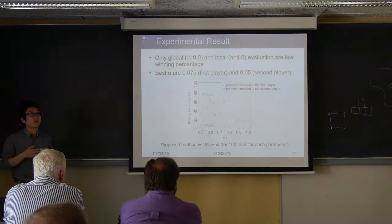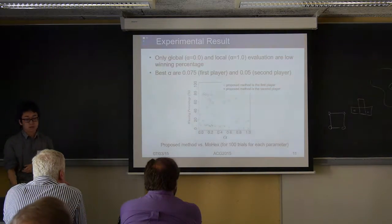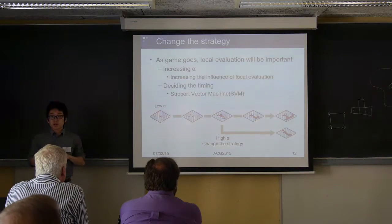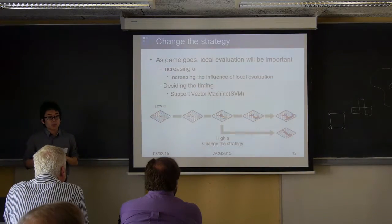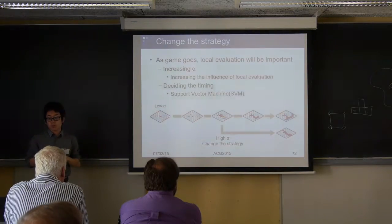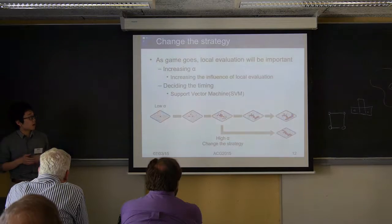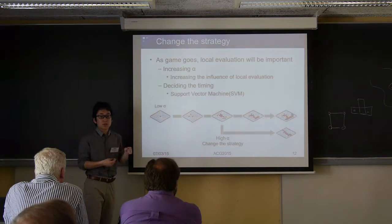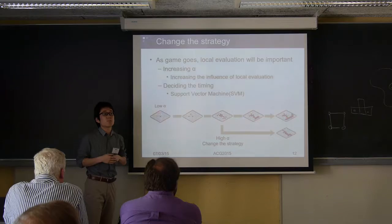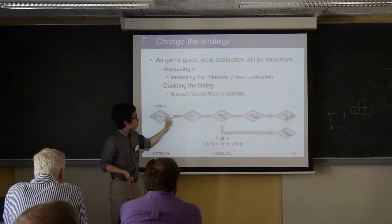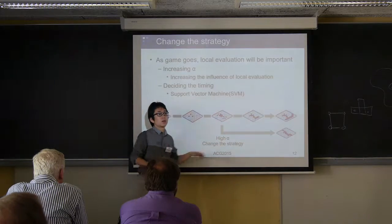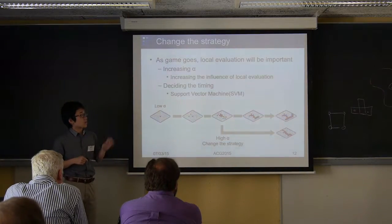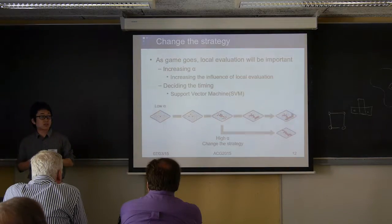To improve our method, we change the strategy depending on board states. The best alpha was a low value when fixed, but we think increasing alpha is effective in the later part of matches, because the victory condition of hex is connecting the two sides, making local evaluation most important late in the game. We change from low to high alpha in the later part of matches, and to decide the timing we use a support vector machine.